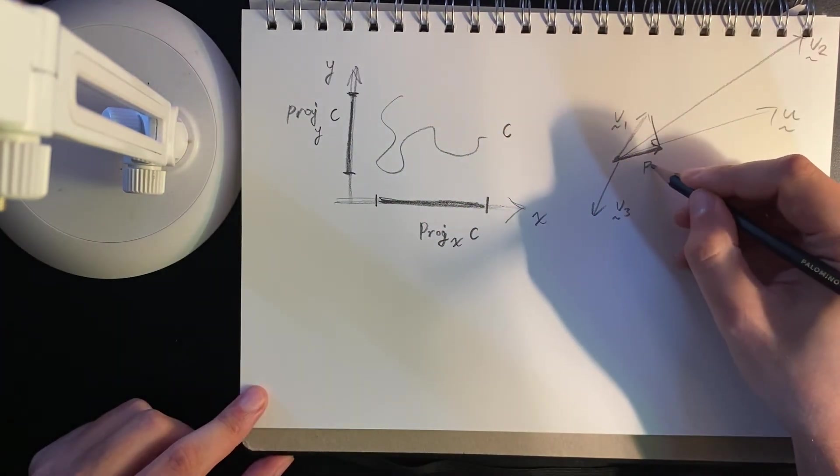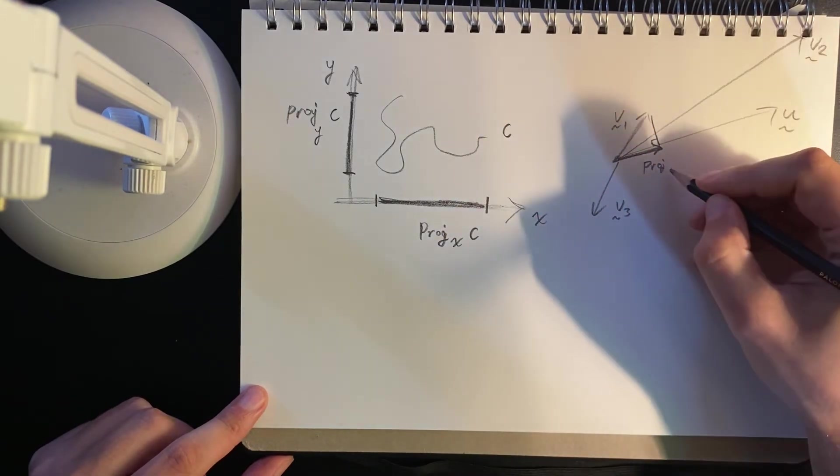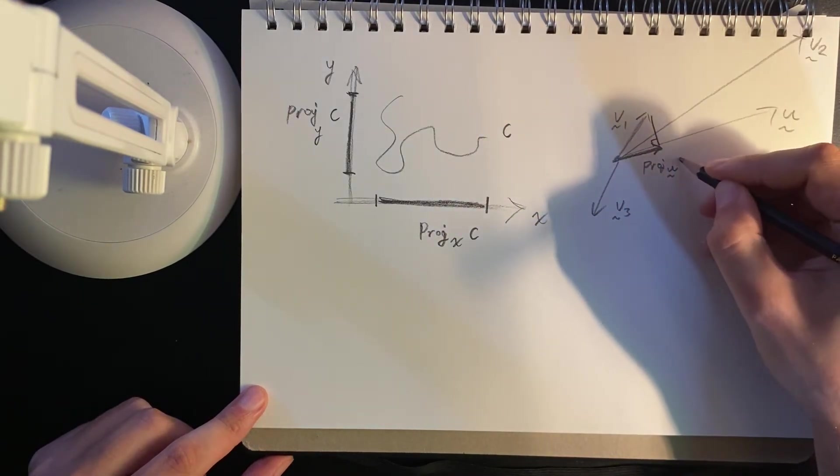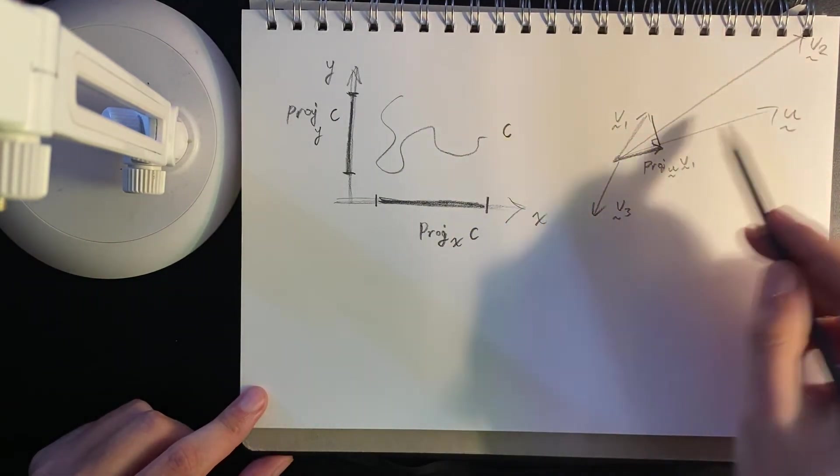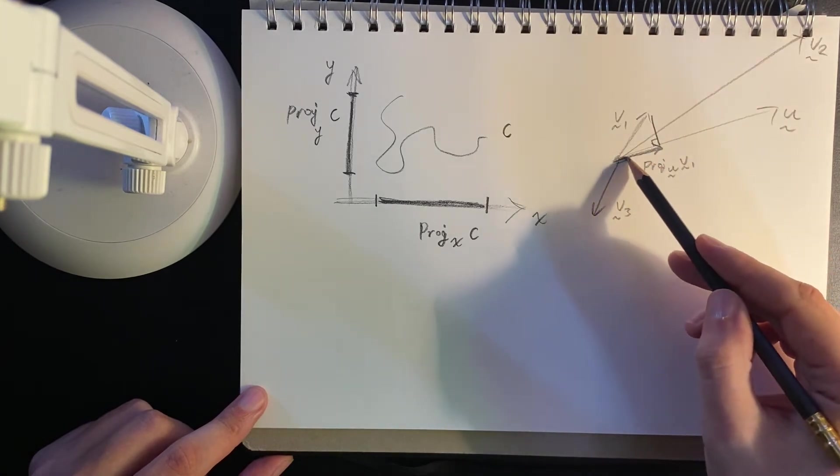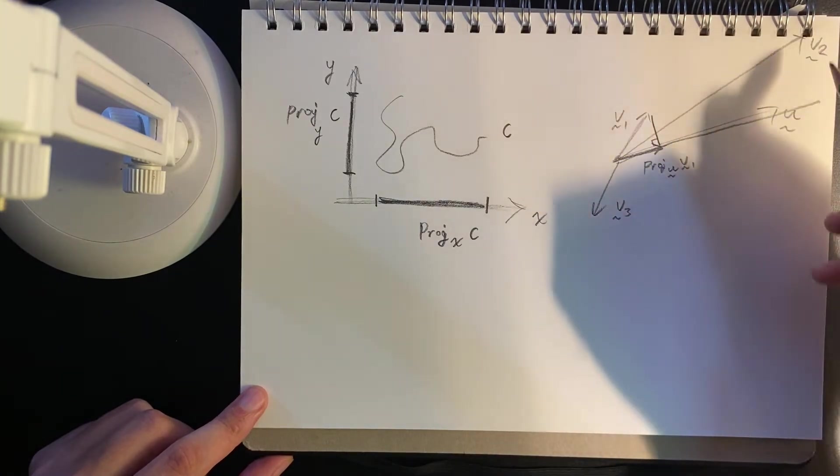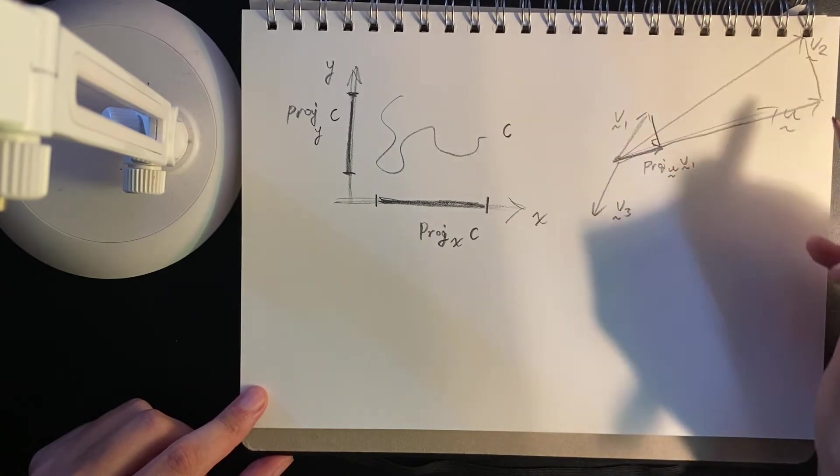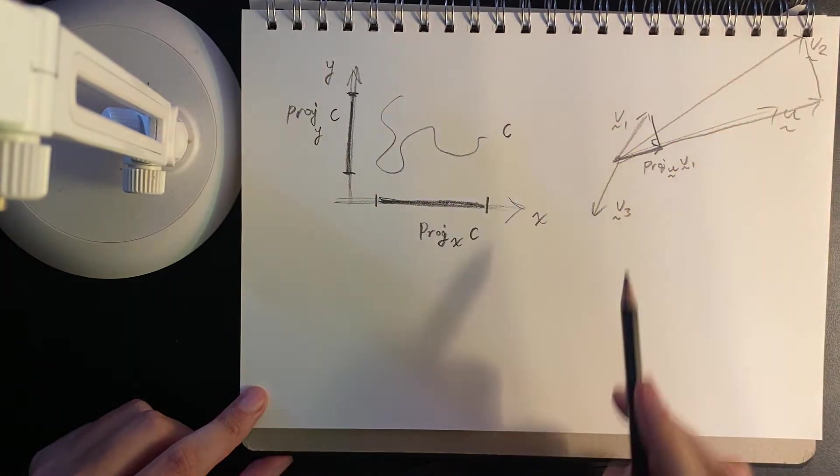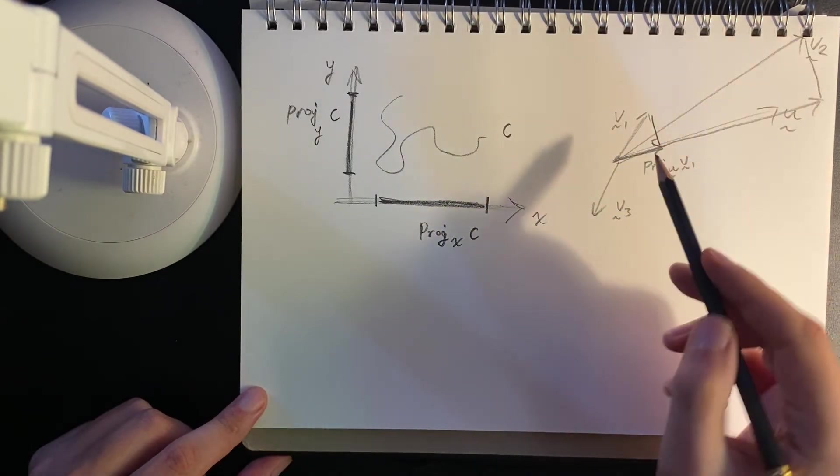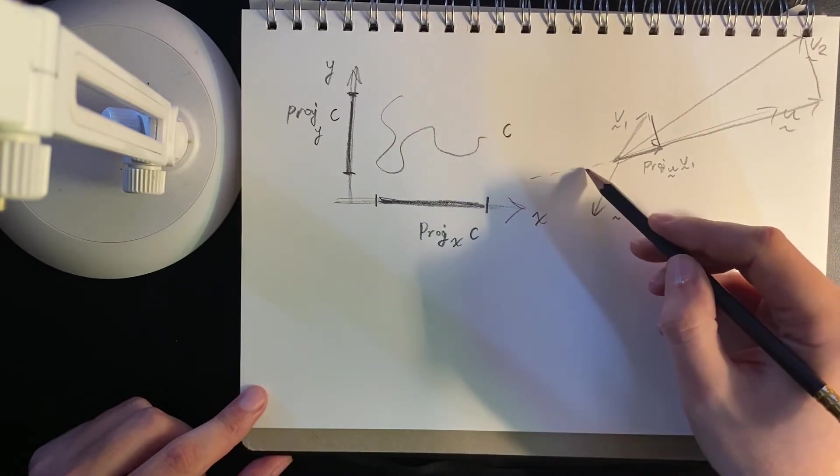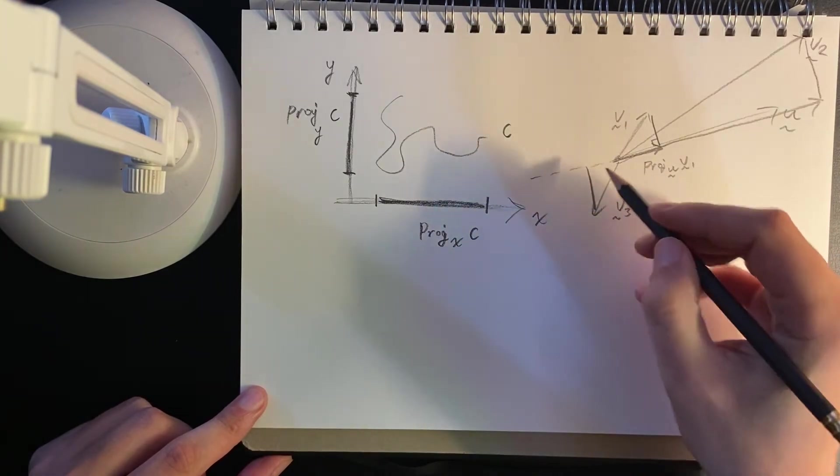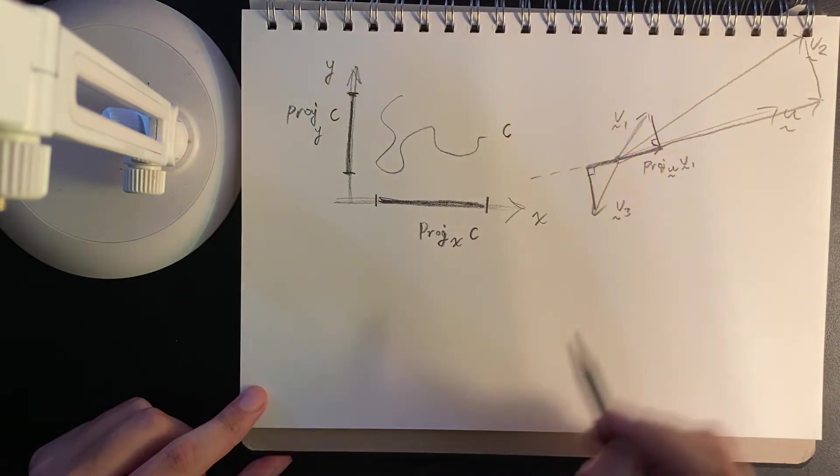This is the projection onto the basis vector u of the vector v1. Here, v2 extends beyond u. That's okay. So we drop it down. v2, it has the direction of u, and it has the appropriate length. Here, v3 is opposite u. That's fine. Just imagine extending this the other way. Drop it up in this case. It has the direction of u, just reversed, and it has the appropriate length.